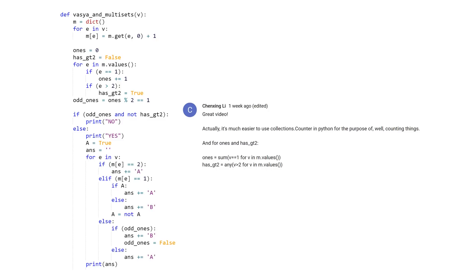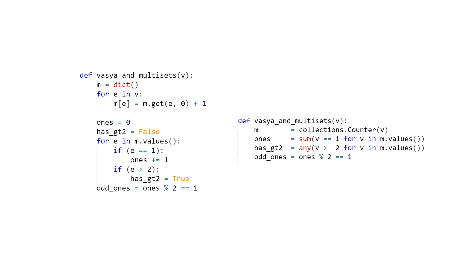And for the Python solution, Chen Xing Li pointed out that it's more idiomatic to use the collections.counter data structure in Python, and that we can also initialize ones and has_gt2 a little bit cleaner. So if we just look at that code, we can basically see the difference. Instead of using a hash map and then manually counting each of the elements, we can use the counter collection, which you can do in a single line. And then instead of manually counting ones and setting has_gt2, we can just use sum and any, the two algorithms there.